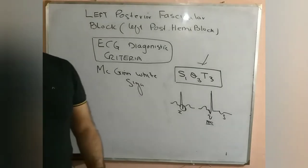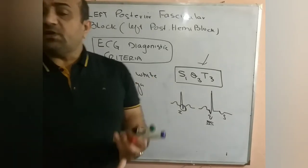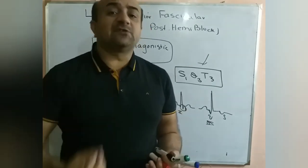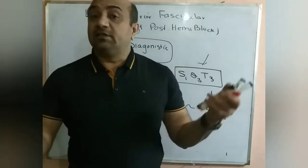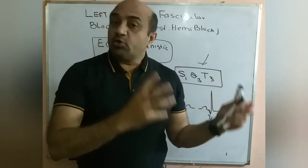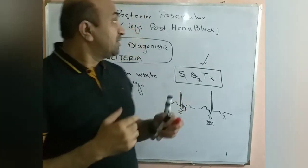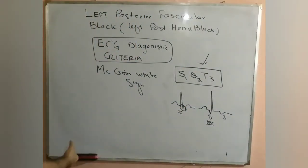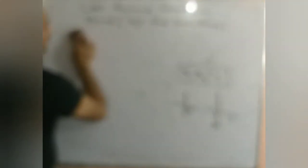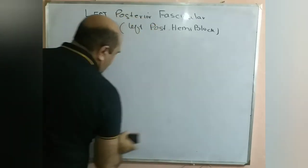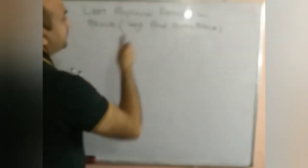Otherwise, if there is right axis deviation, an RS pattern in lead 1 and AVL, a QR pattern in lead 2, 3, and AVF, and a narrow QRS complex, then you can diagnose left posterior fascicular block. Additionally, as with left anterior fascicular block, there is the concept of bifascicular block.